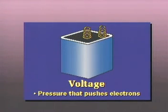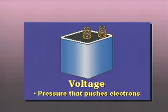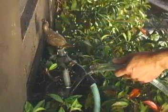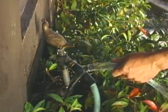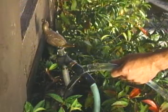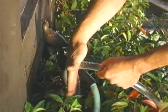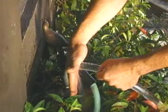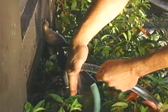Voltage is the pressure that pushes the electrons and causes them to flow. It is the force caused by coulombs of electrons repelling each other. In our water hose analogy, voltage is very similar to the pressure you can feel if you put your hand over the nozzle. The force or pressure pushes the water out of the hose.